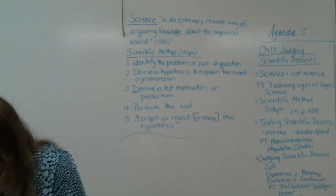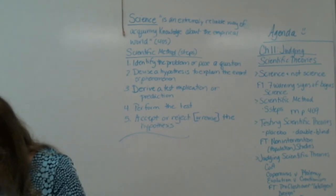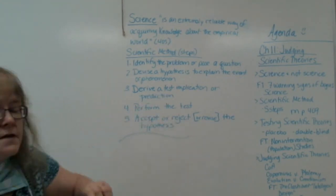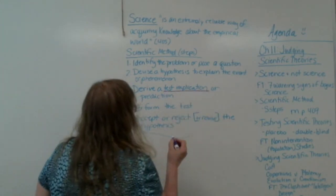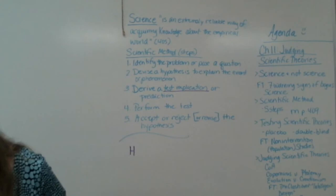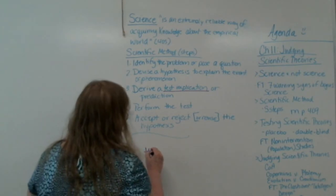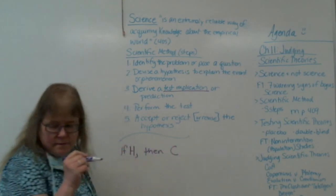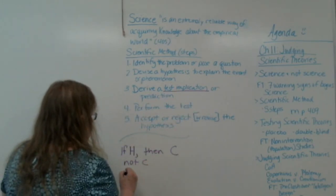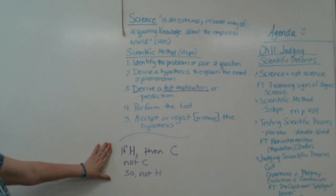This logic of hypothesis testing works like this, and this is on page 407. If we're trying to figure out, does this work? The hypothesis: if my hypothesis is correct, then this consequent will happen. If H, then C. I run my test and get no C. So, not H. We know that this is a modus tollens - this is a valid argument.